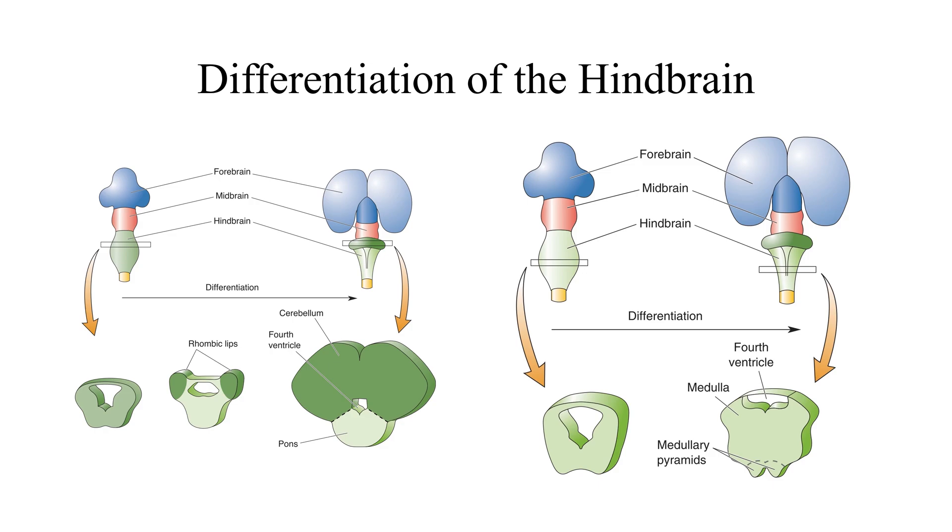At the three vesicle stage, the rostral hindbrain in cross section is a simple tube. In subsequent weeks, the tissue along the dorsal lateral wall of the tube, called the rhombic lip, grows dorsally and medially until it fuses with its twin on the other side. The resulting flap of brain tissue grows into the cerebellum. The ventral wall of the tube differentiates and swells to form the pons.